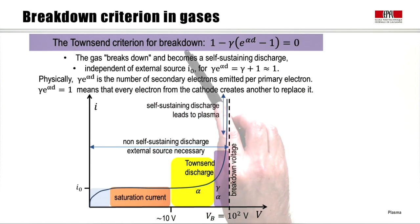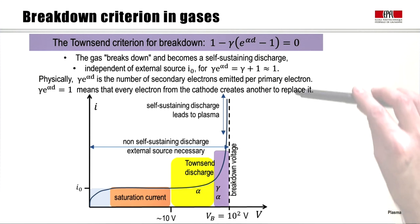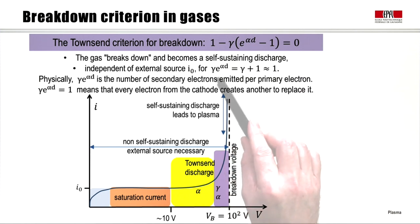This then is the Townsend criterion for breakdown in gases between parallel electrodes, that is, that 1 minus the ratio equals zero. In this case, the gas breaks down and becomes a self-sustaining discharge. That is, that the discharge is independent of the external source. For this condition, gamma e to the alpha d equals gamma plus 1, which is approximately equal to 1. Physically, this simply means that the number of secondary electrons created per primary electron is at least equal to 1. That is, every electron from the cathode creates another to replace it. And now we have our full current voltage diagram, where the saturation current undergoes avalanche and secondary emission to become a self-sustaining plasma instead of a non-self-sustaining discharge.